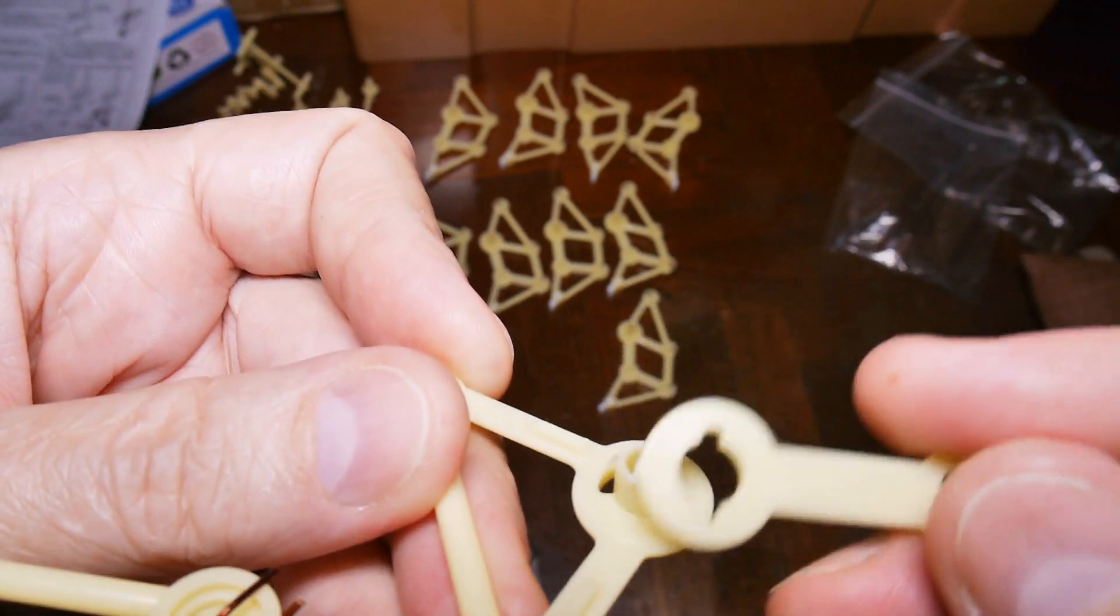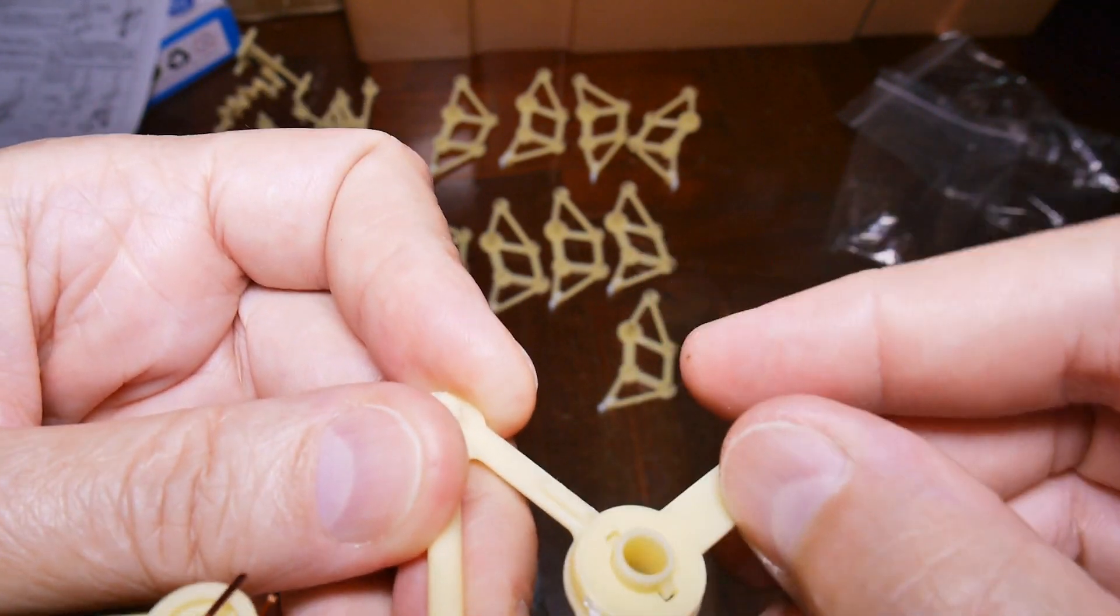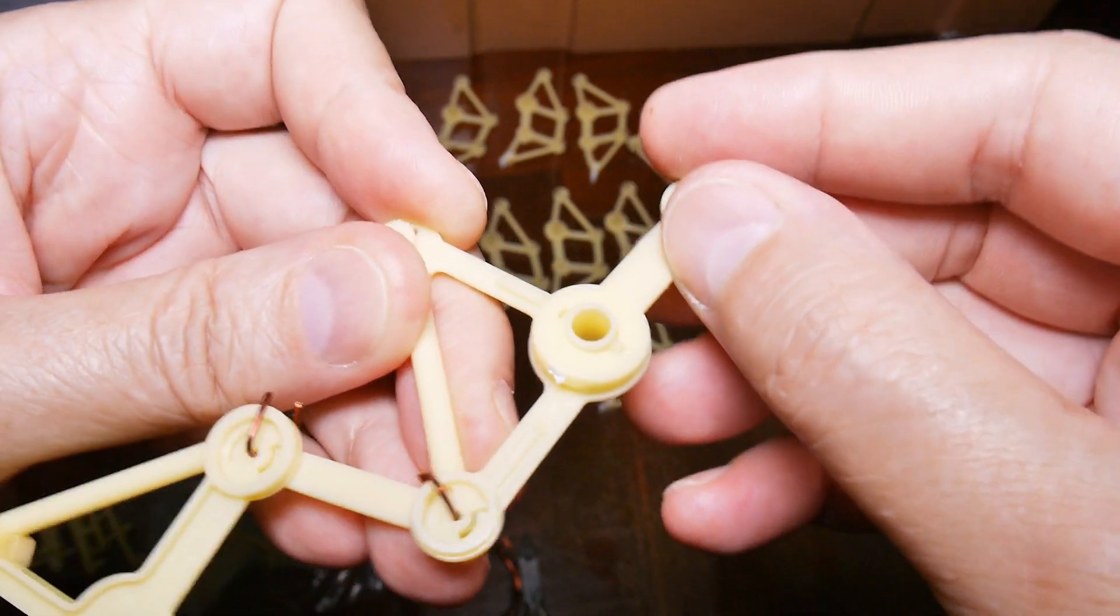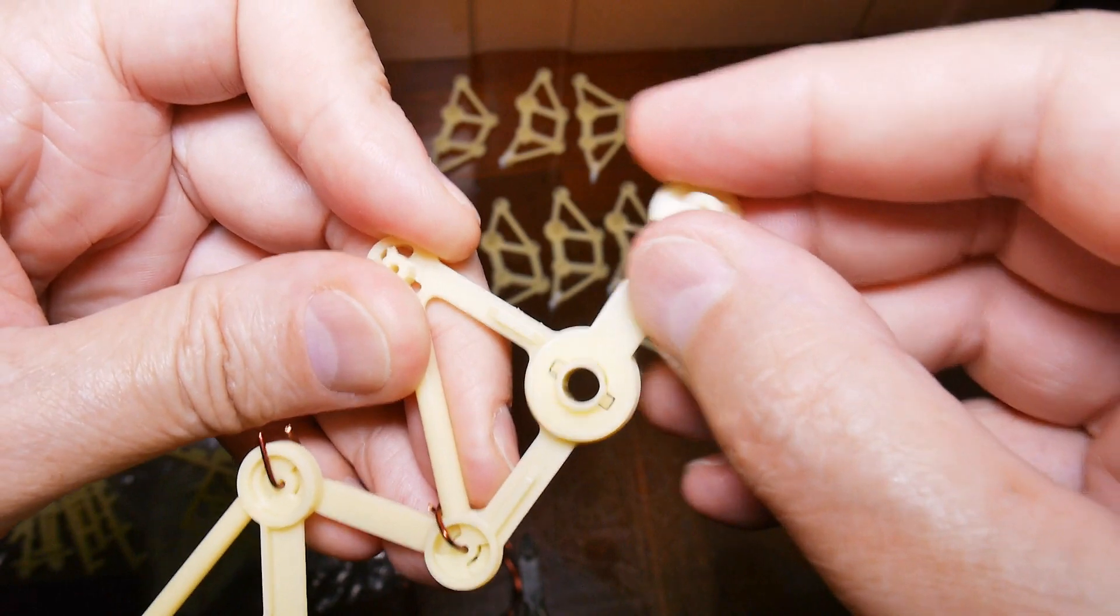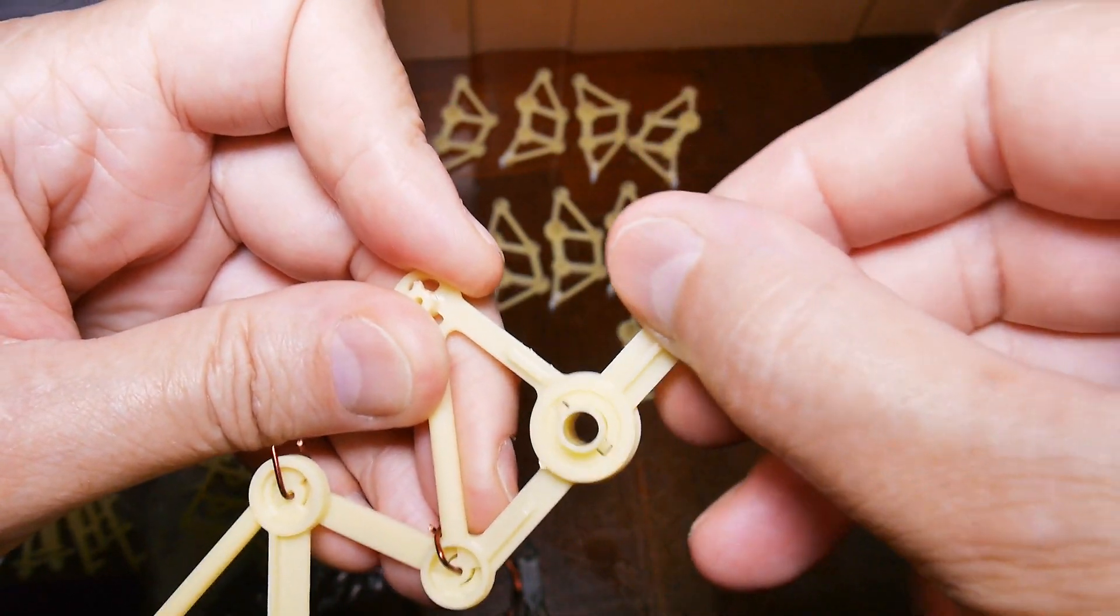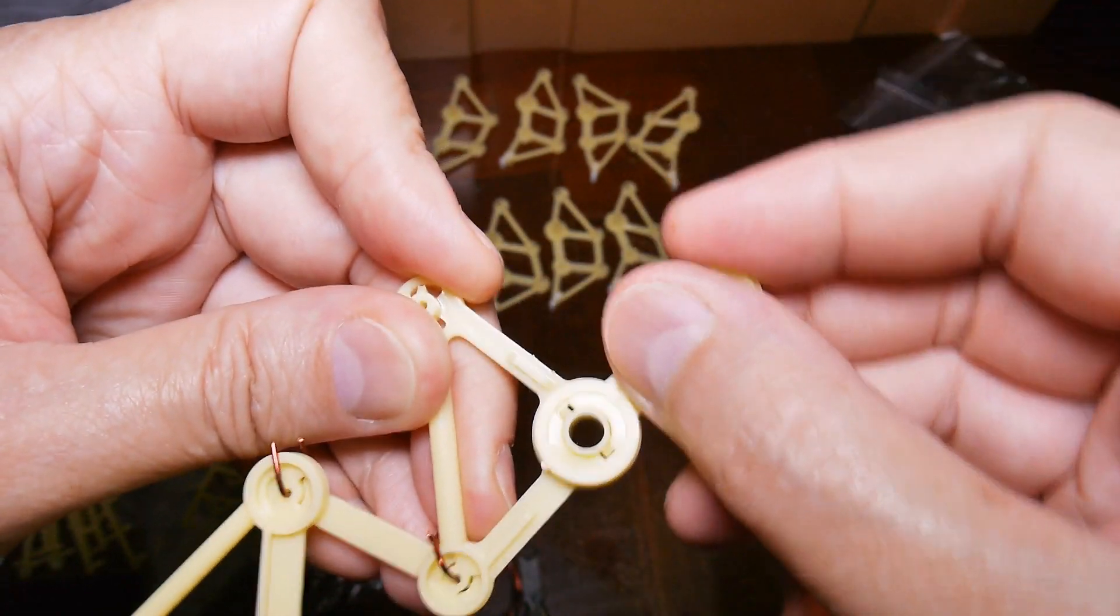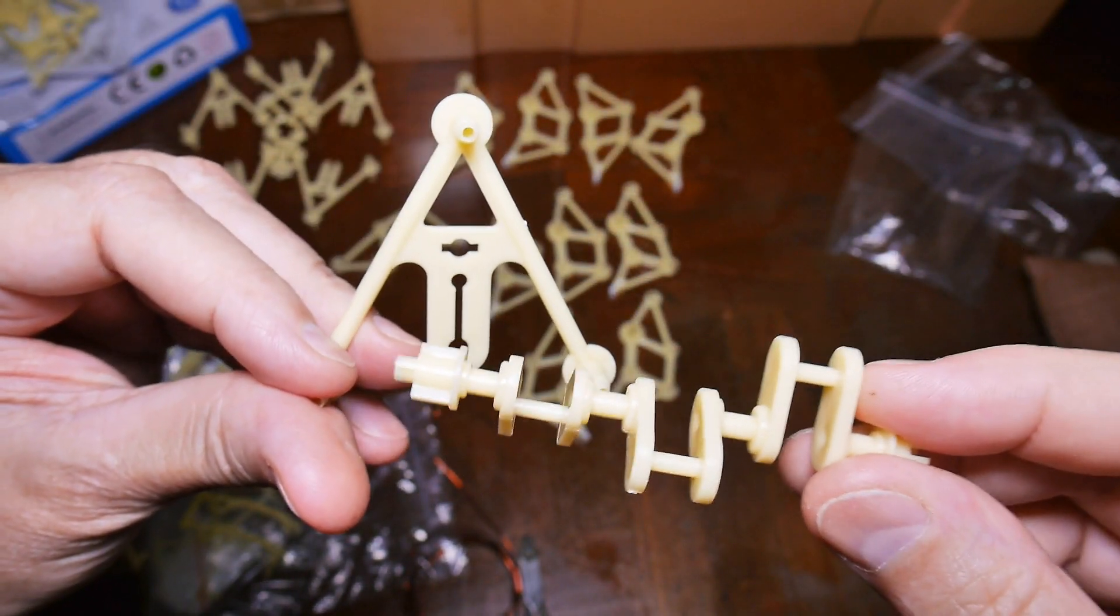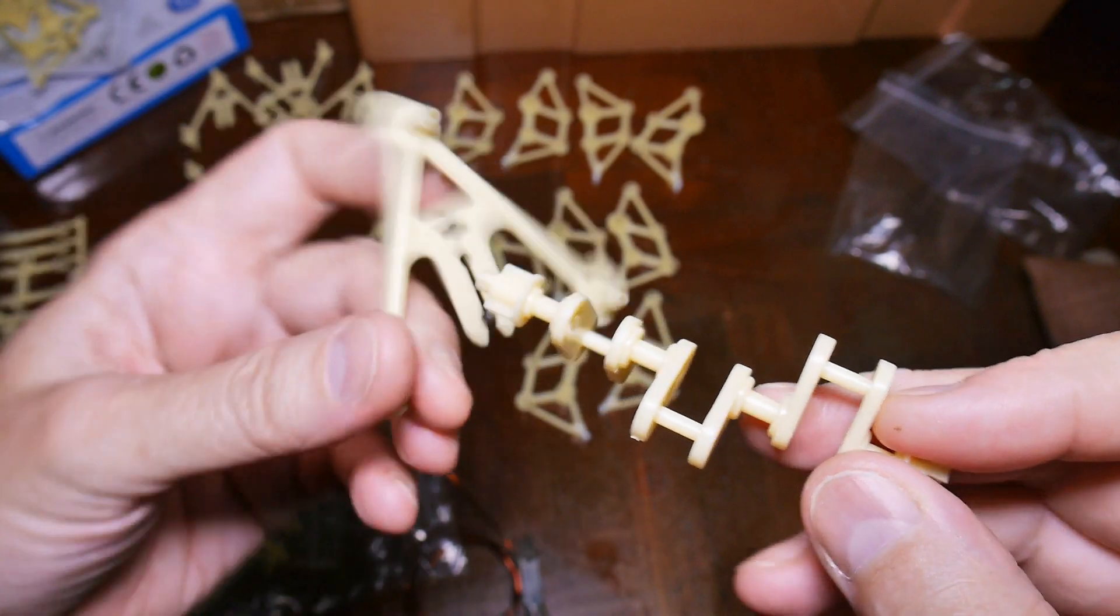If you try to put it on the other way, you'll find that it probably won't go. So it'll lock and it won't move. You'll need to put it on like this, flip it over and then you'll find it has a full range of motion. Now what we're going to do next, we're going to take this crankshaft and we're going to snap it into one of these A-frames.